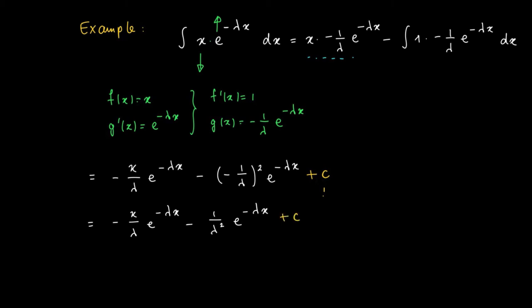And now we factorize and take out the term minus 1 over lambda e to the power minus lambda x. And the remainder term is 1 over lambda plus x. And finally we add the integration constant. So again here we used integration by parts or partial integration by removing the x from the original integrand.